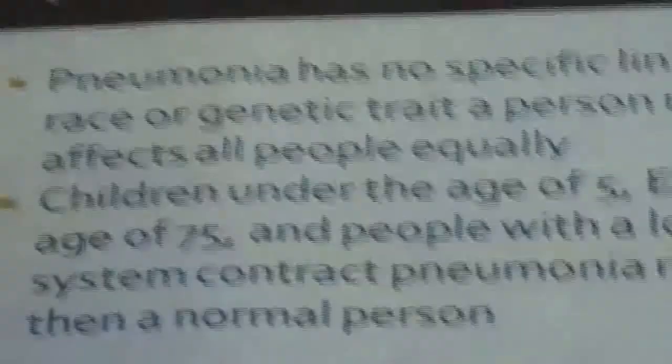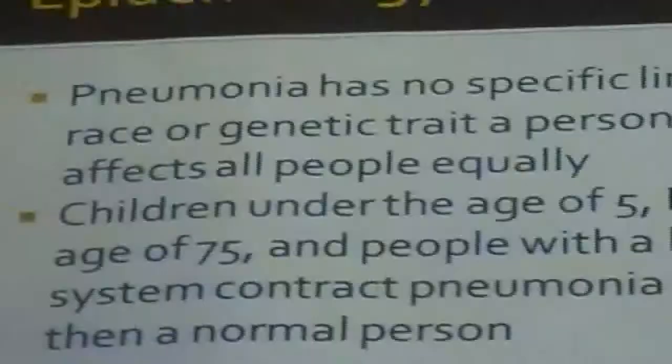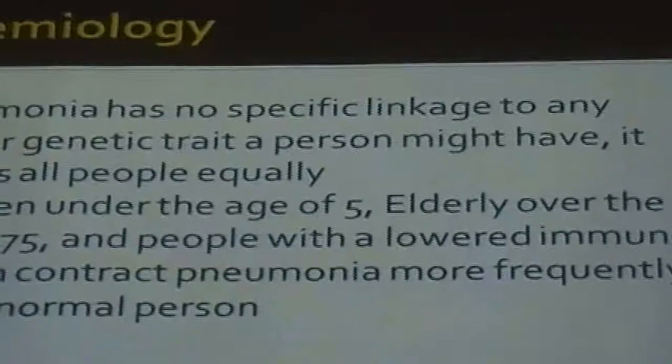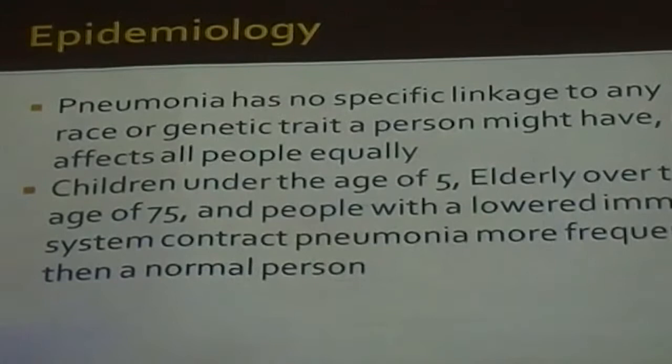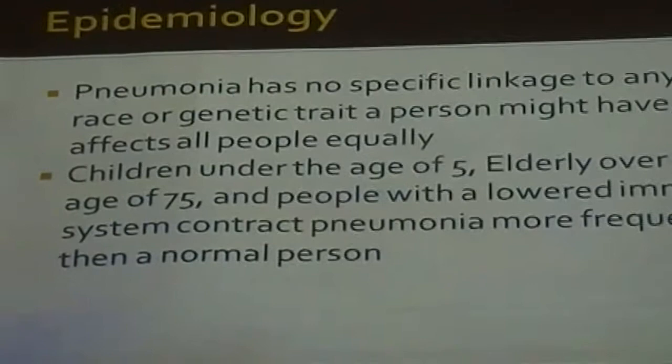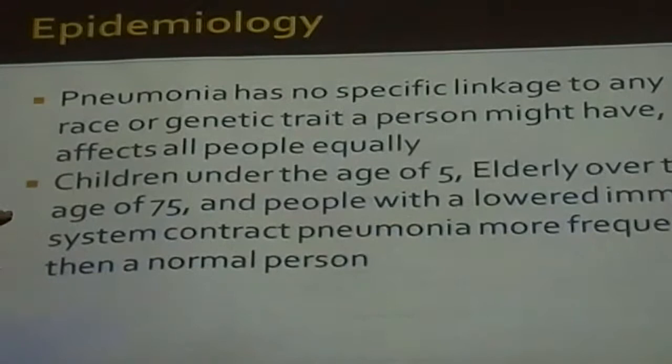Epidemiology. Unlike some diseases, pneumonia isn't particularly restrictive or more likely to affect a specific culture or race — it doesn't have any specification towards a race. It can be contracted by anyone, but most likely affects those with a weakened immune system. Children under five, the elderly, and people with a lower immune system such as those with HIV or AIDS contract pneumonia more frequently.